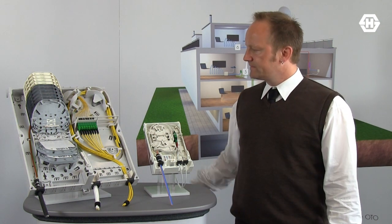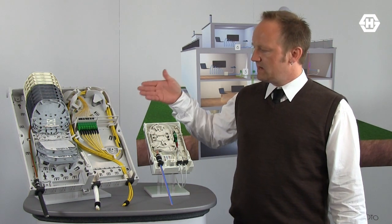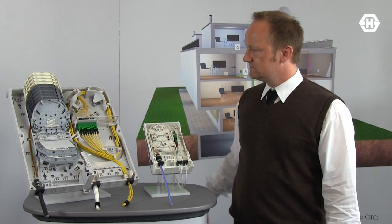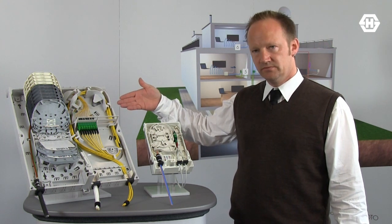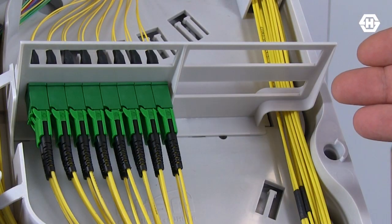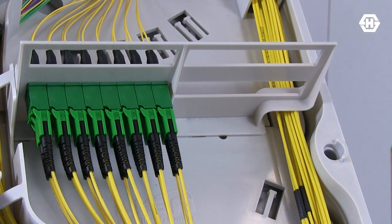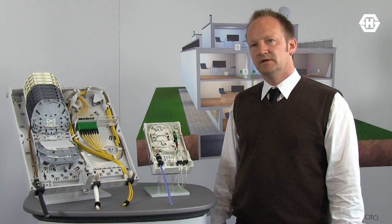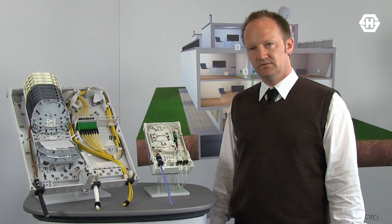The number in the name shows you the amount of adapters that you can include inside of the box. For example, OptiBox 32 up to 32 SC shaped adapters. In case of an LC connector you can reach a density up to 64.